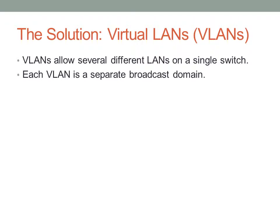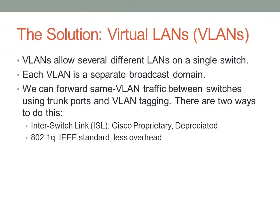Each VLAN is a separate broadcast domain. The really cool part about VLANs is that we can actually extend a VLAN from one switch to another. We do this with what are called trunk links. We could have VLAN 1 on one switch and VLAN 1 on another switch, and VLAN 1 on both switches would be in the same broadcast domain — devices on that VLAN can interact with each other and are separate from VLAN 2. VLAN 2 may extend between two, three, or more switches using a trunk link.